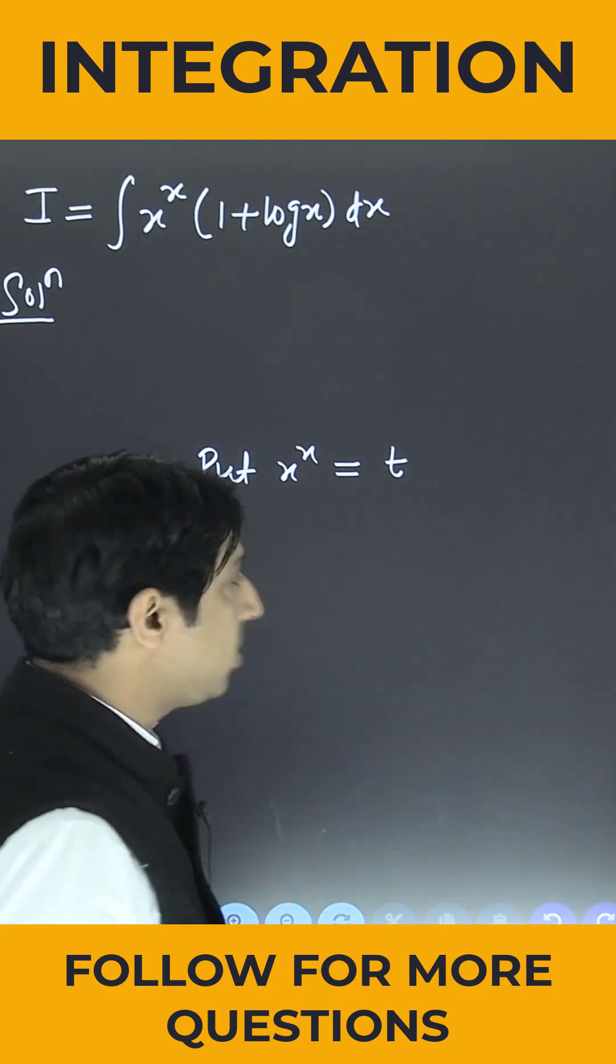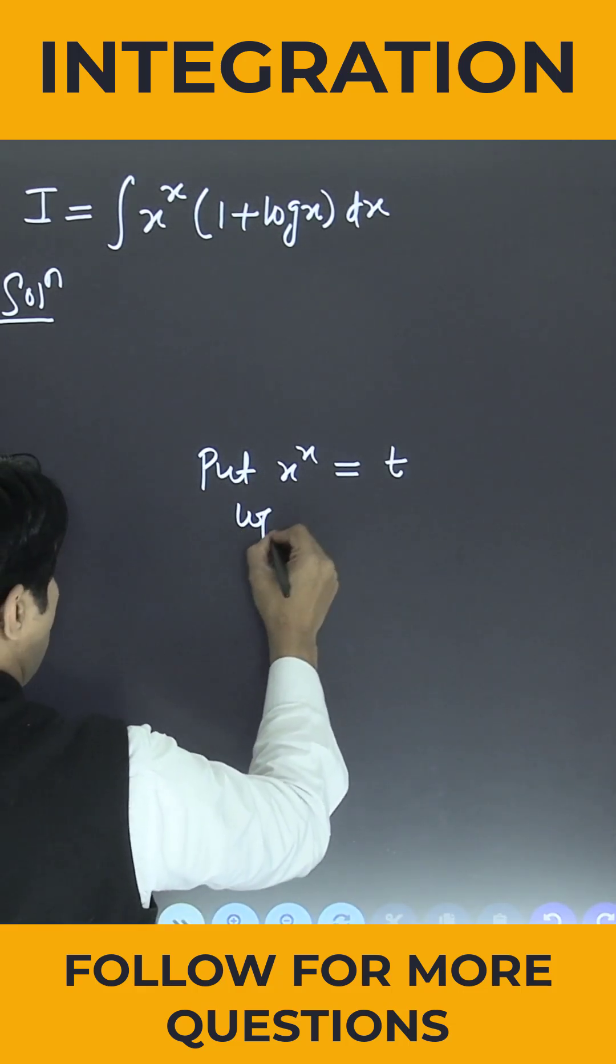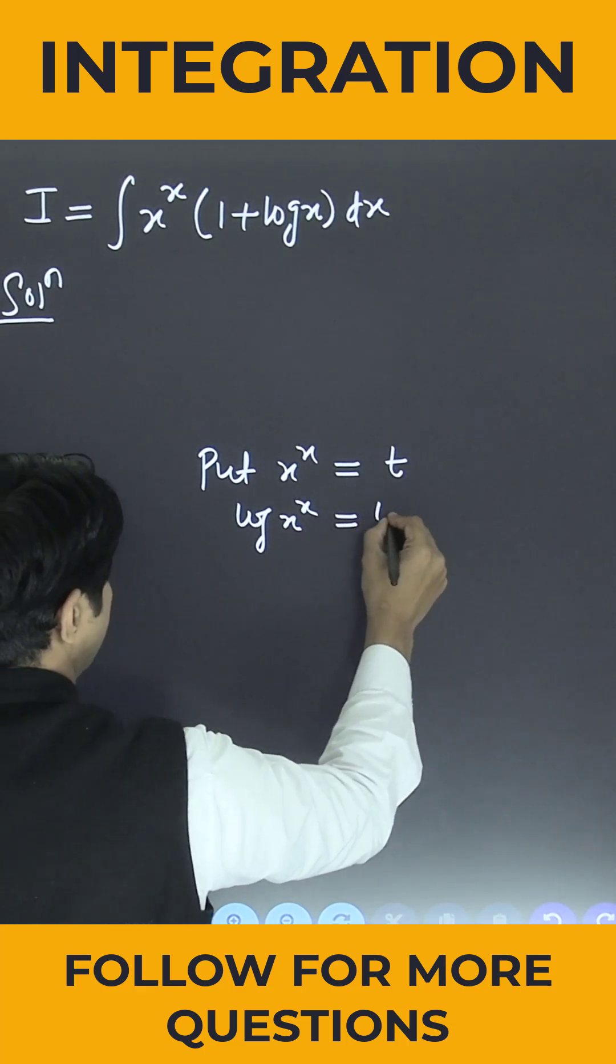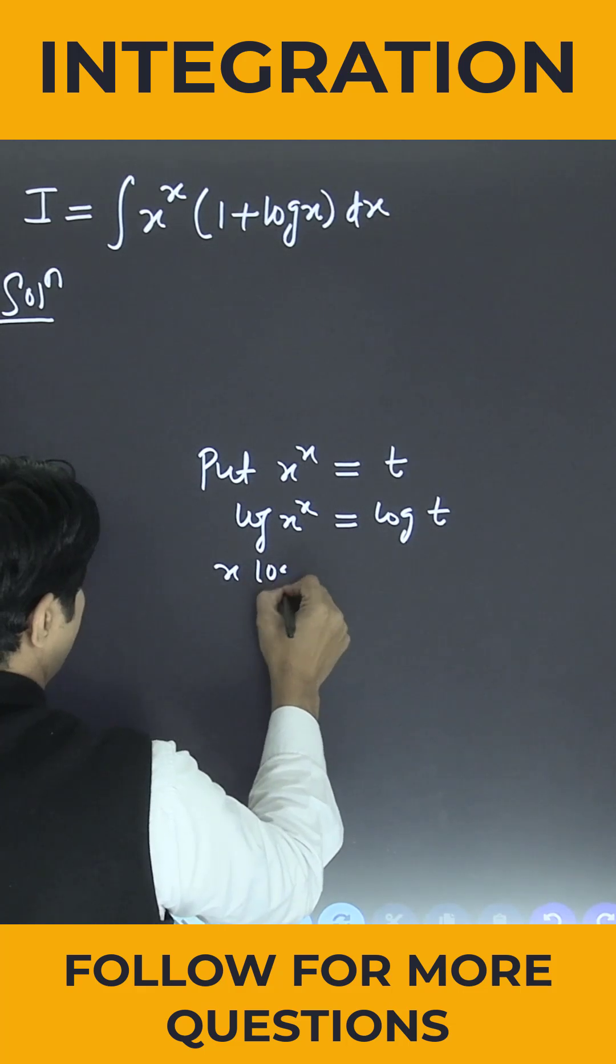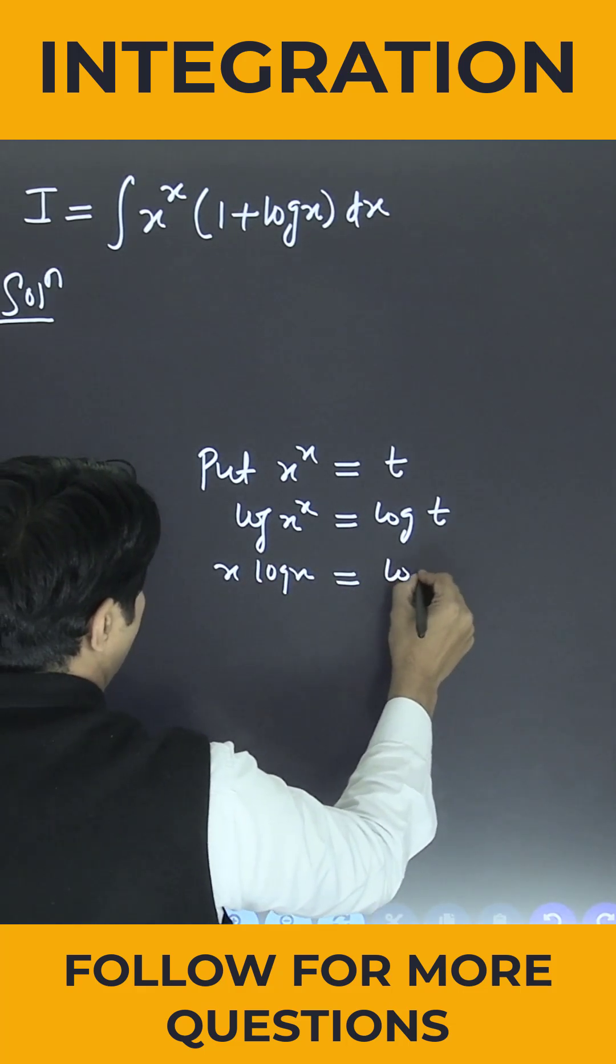Now take log both sides, so can I say log of x to the power x is nothing but log of t. We can write this as x log x is equal to log of t.